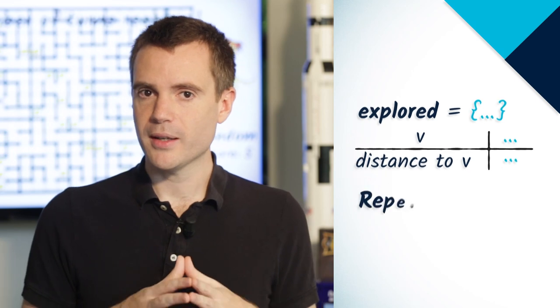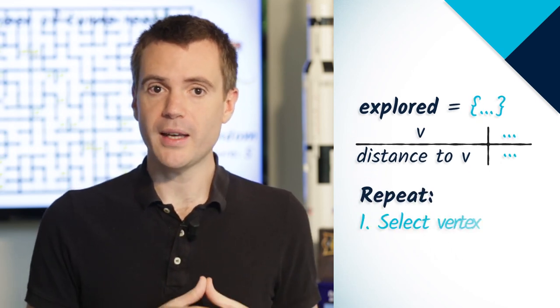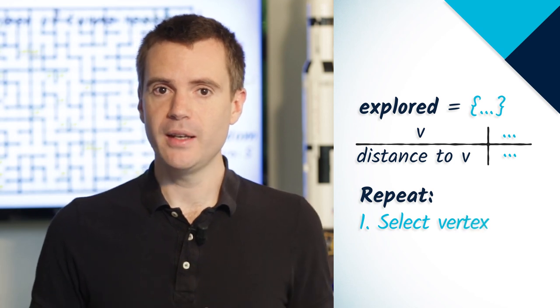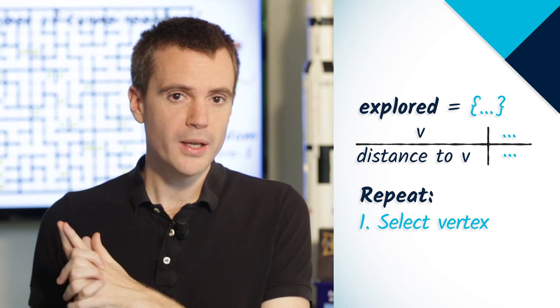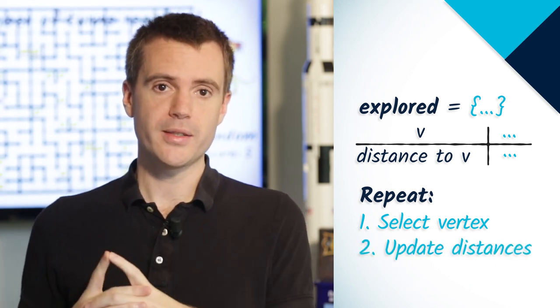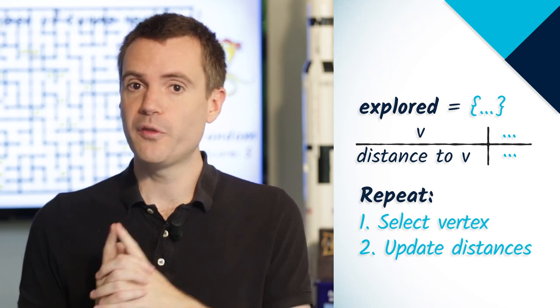Dijkstra's algorithm repeats two steps. In step 1, it selects an unexplored vertex v that is at minimum distance from v1. In step 2, it updates the distances from v1 to the other vertices of the graph, using information about v and its neighbors.